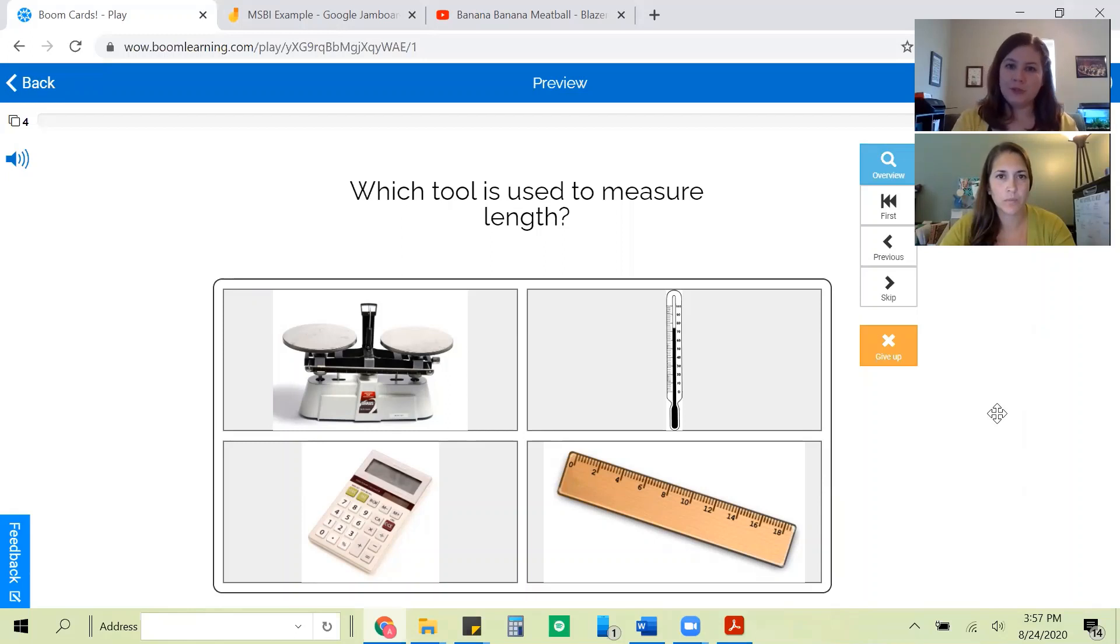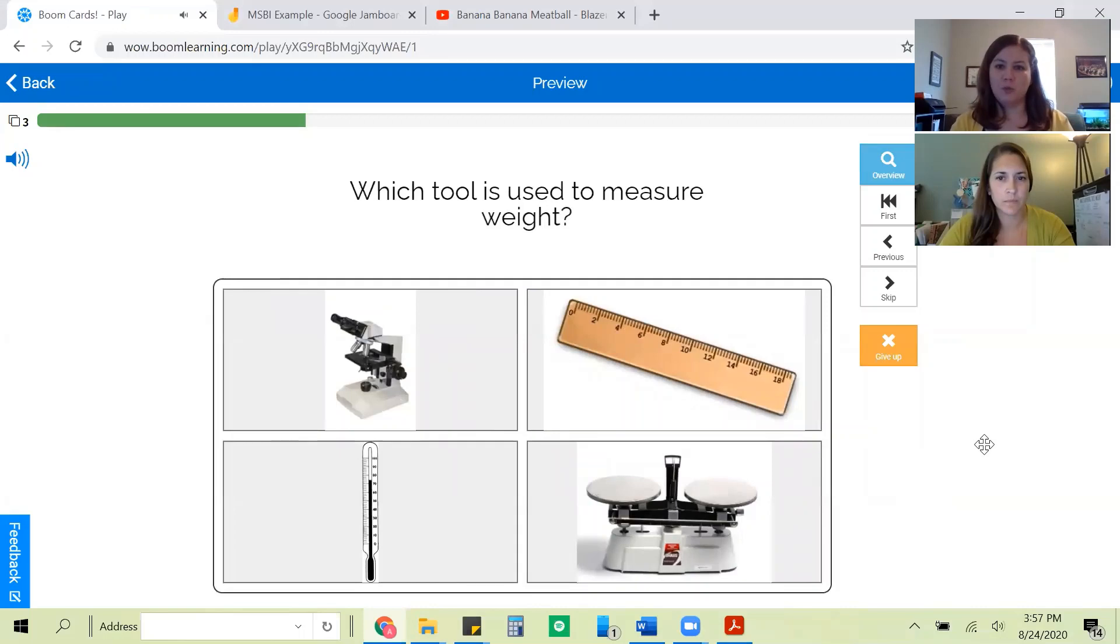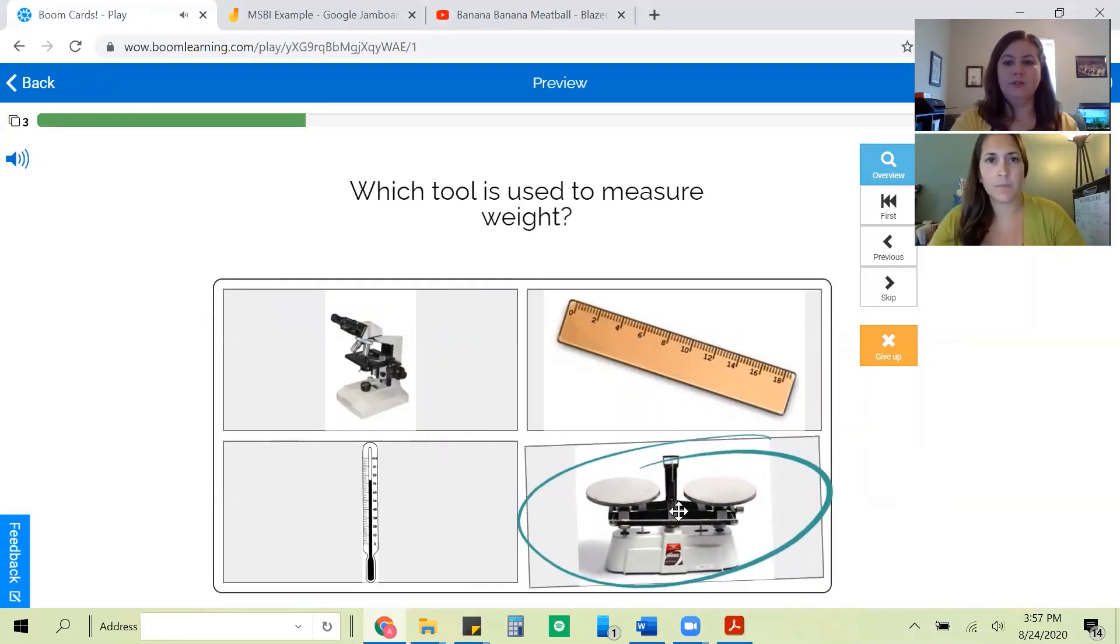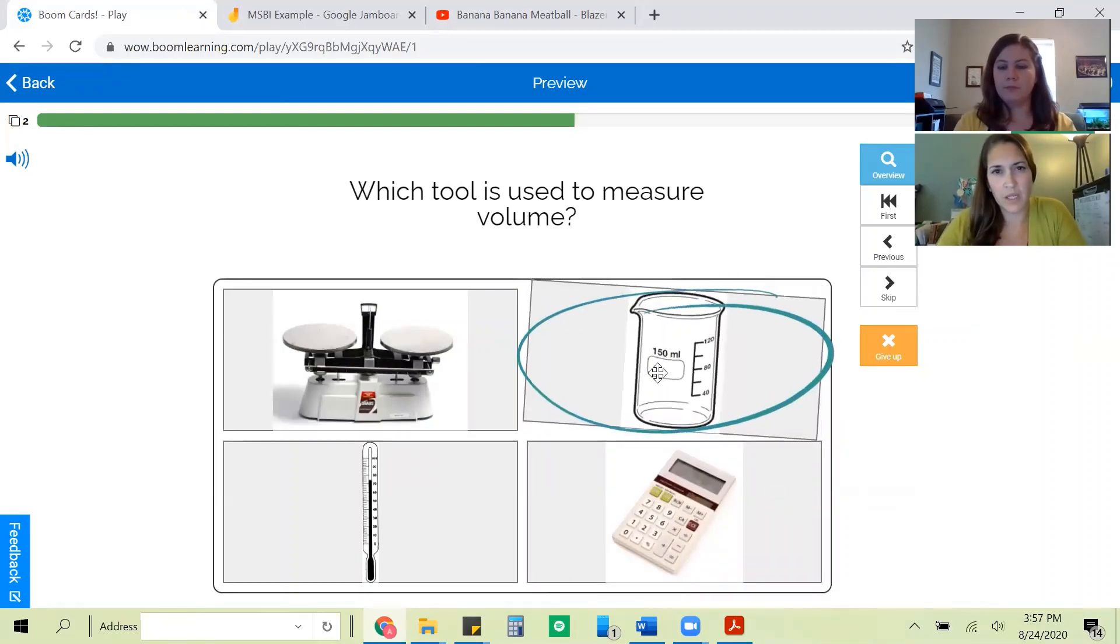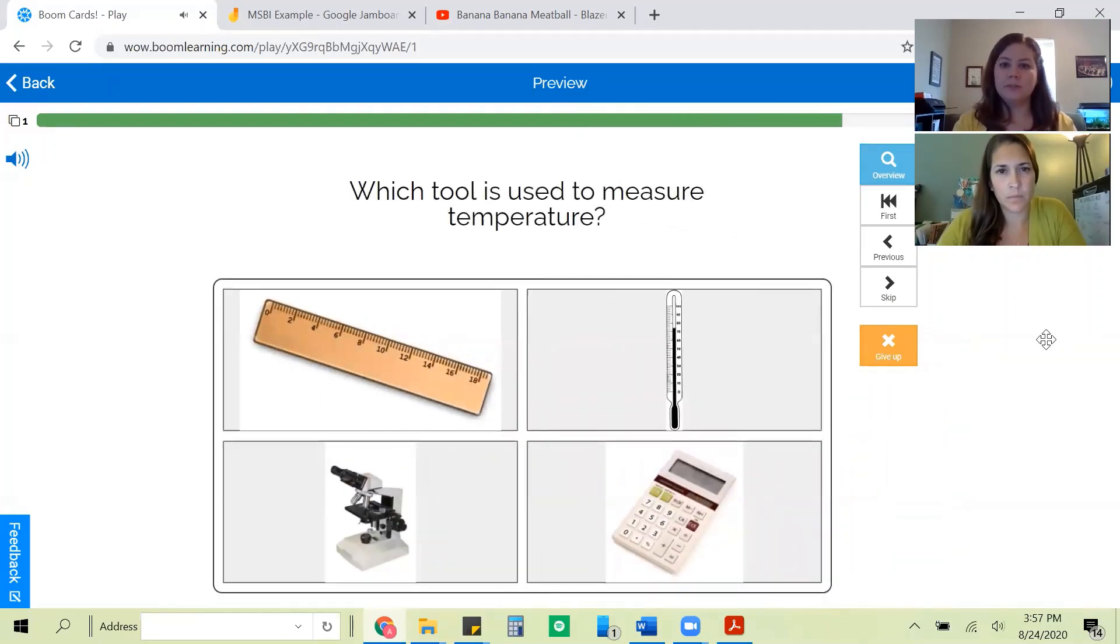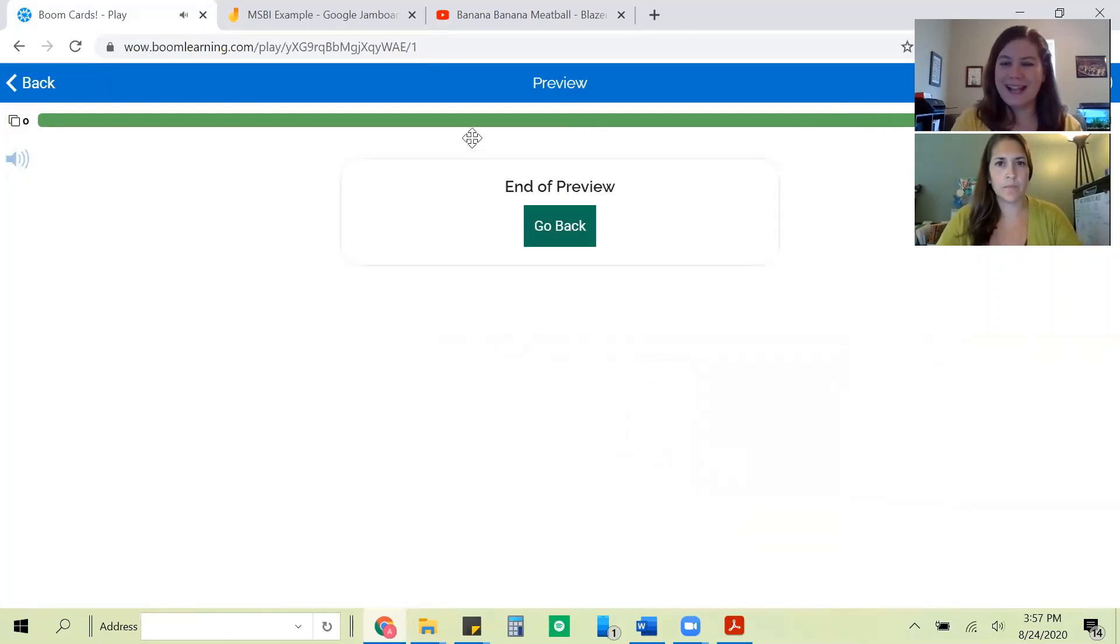Which tool is used to measure length? Ruler. Ruler. Great job. Which tool is used to measure weight? Balance scale. You got it. Which tool is used to measure volume? Beaker. Great. Which tool is used to measure temperature? Thermometer. Awesome. A hundred percent. Let's watch some GoNoodle.